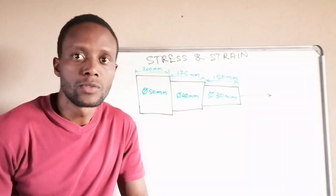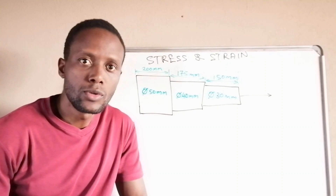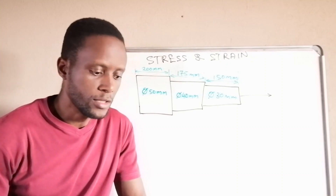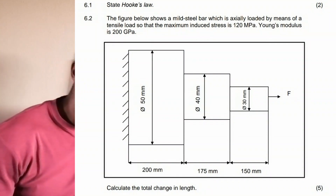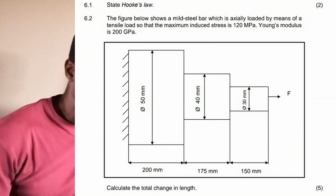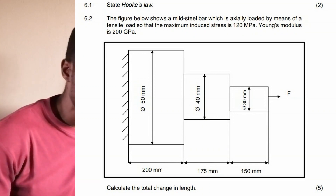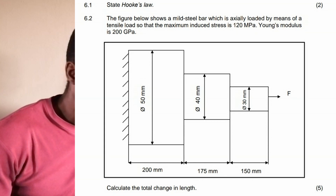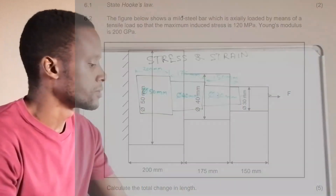Here's a question on stress and strain. The question reads: the figure below shows a steel bar loaded by means of a tensile load so that the maximum induced stress is 120 megapascal. The modulus of elasticity is 200 gigapascal. Calculate the total change in length.